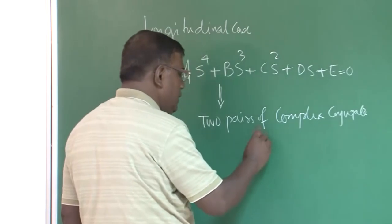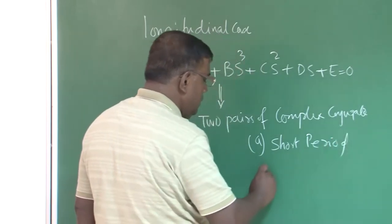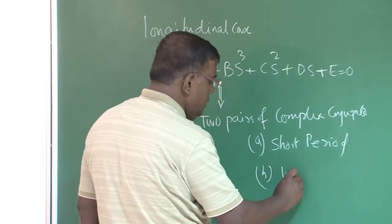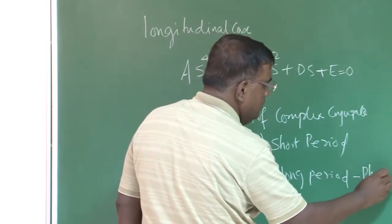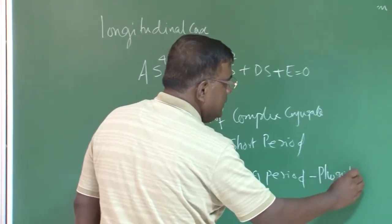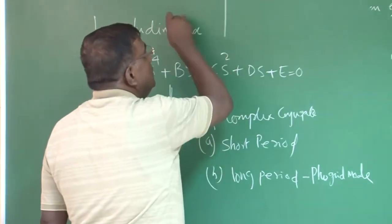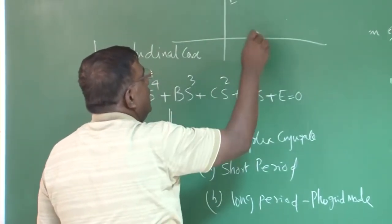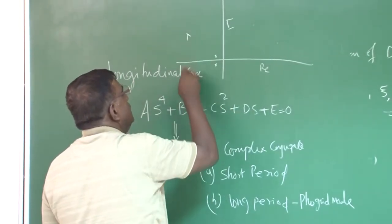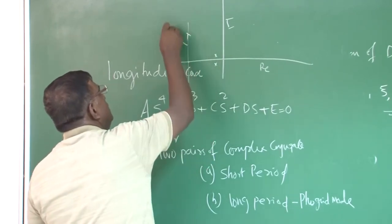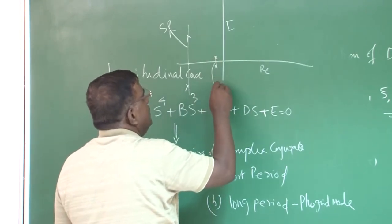And one we identified as short period, another long period, this also called phugoid mode. So if I try to display the roots in imaginary and real axis, we will find one root is here, one complex pair is here. This is large negative, this belongs to short period, and this pair belongs to phugoid.